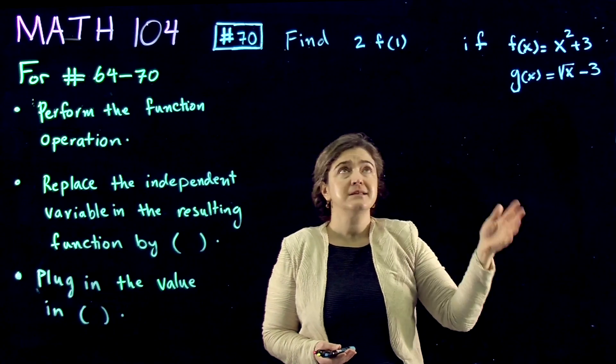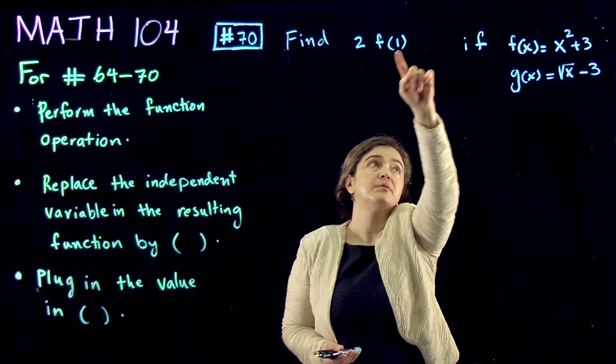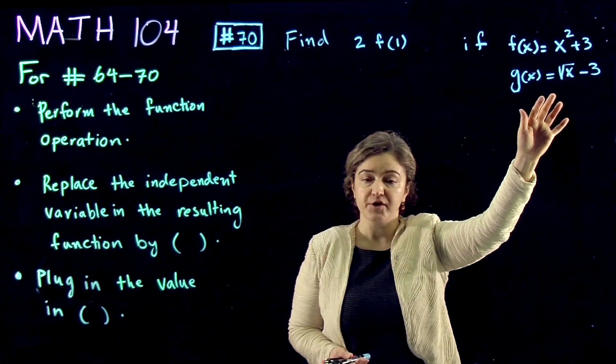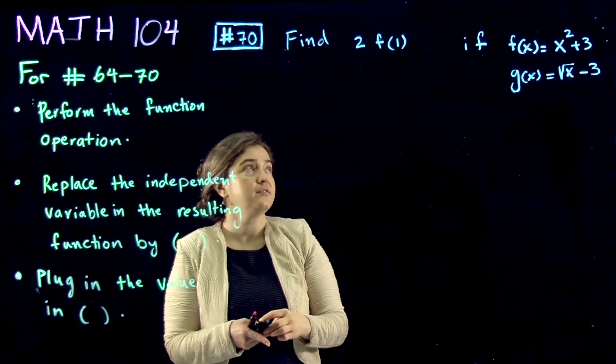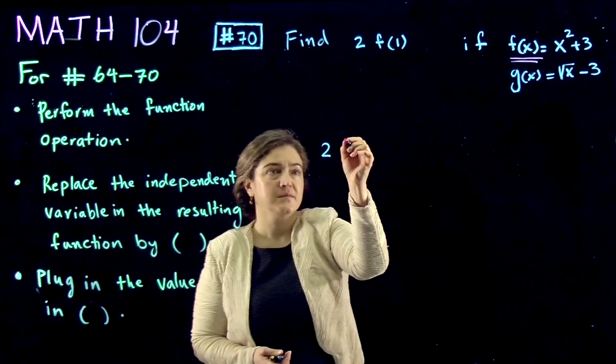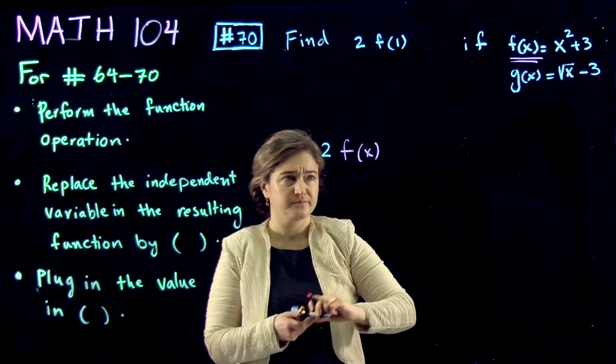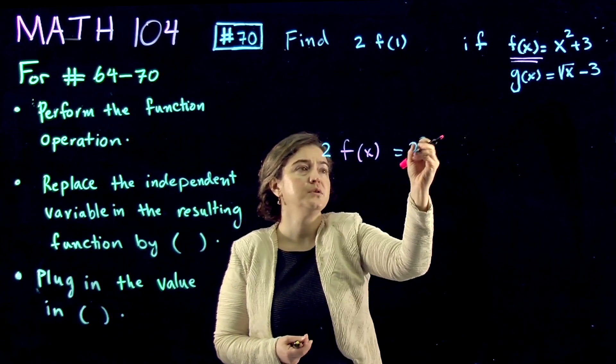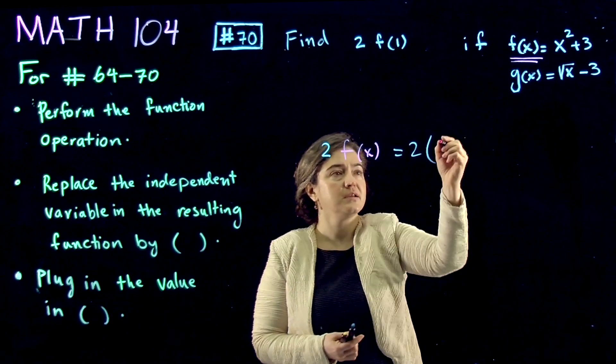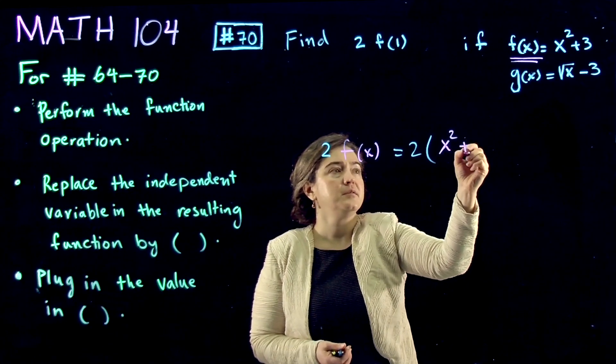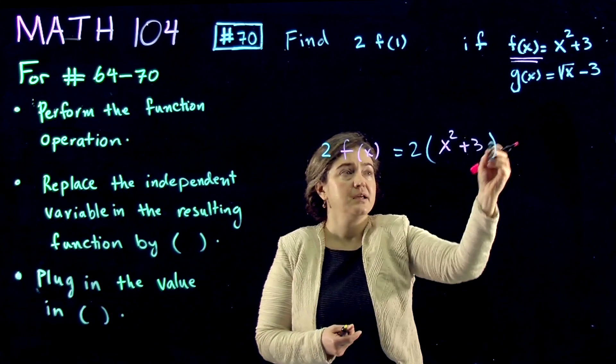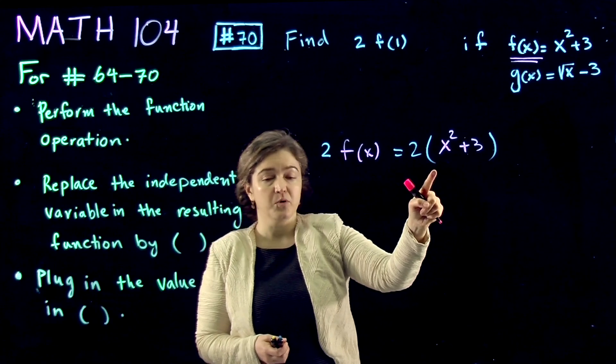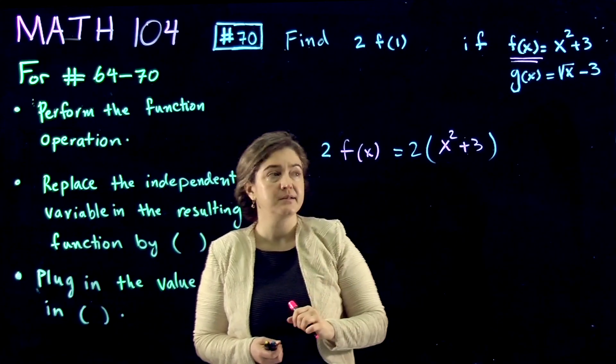And the next step is to perform that operation on the rule of the function. And so the rule of the function is 2f of x equal to 2 times x squared plus 3 in big parentheses. It's important to put the function inside the big parentheses.